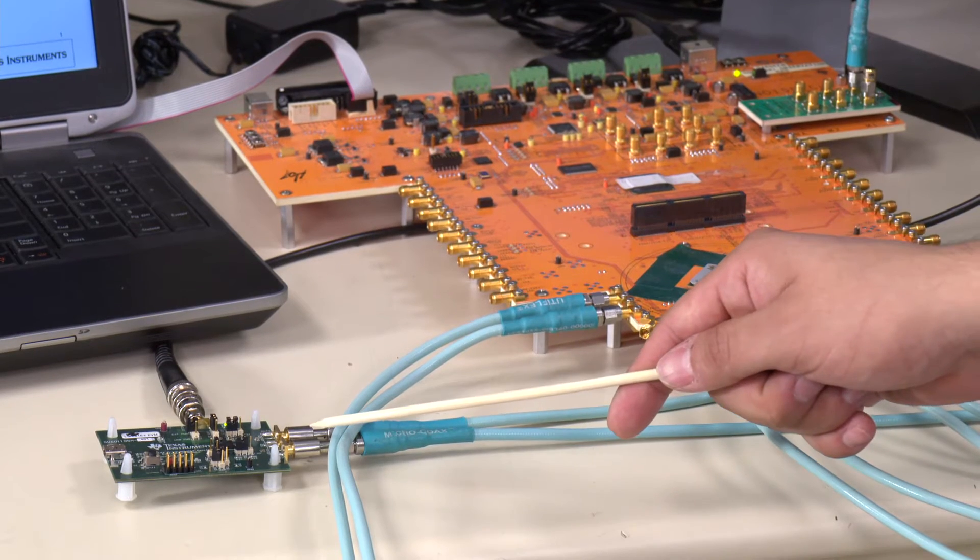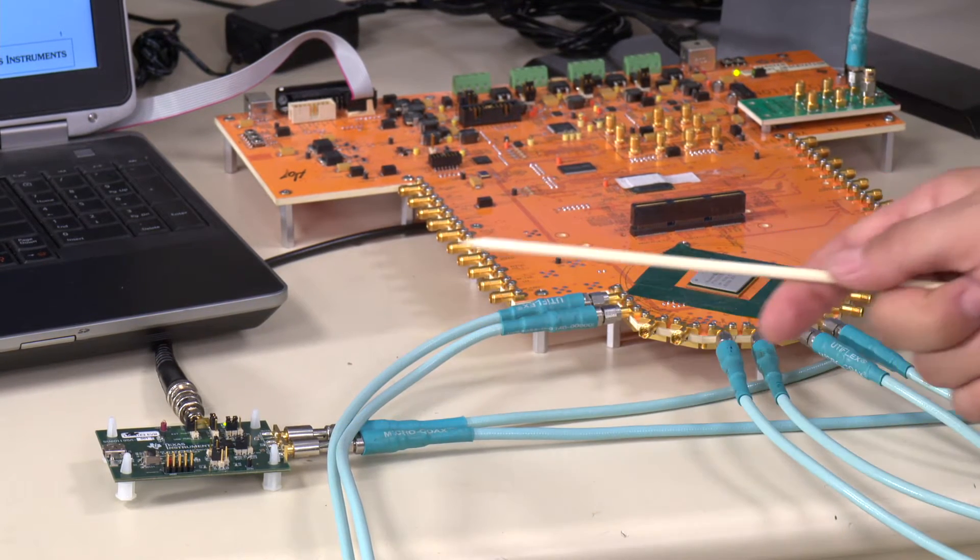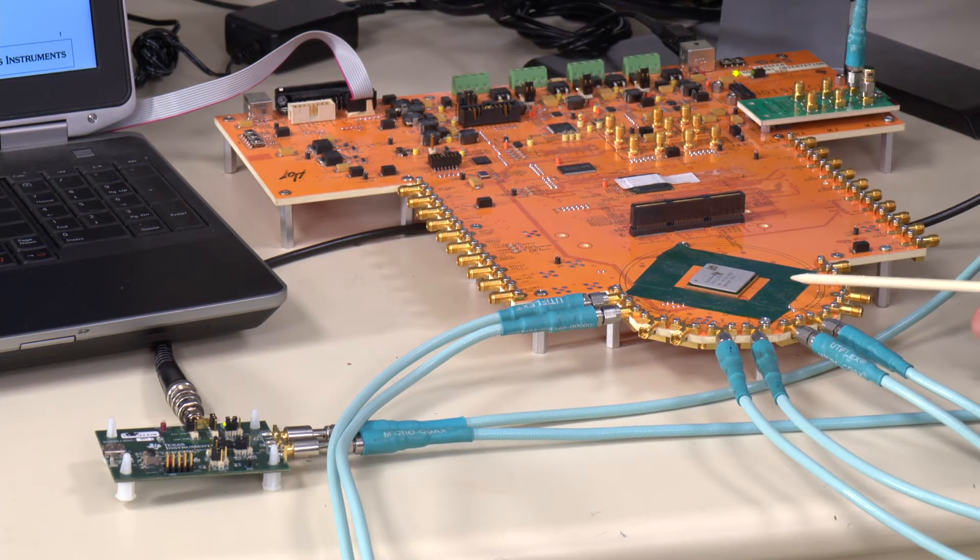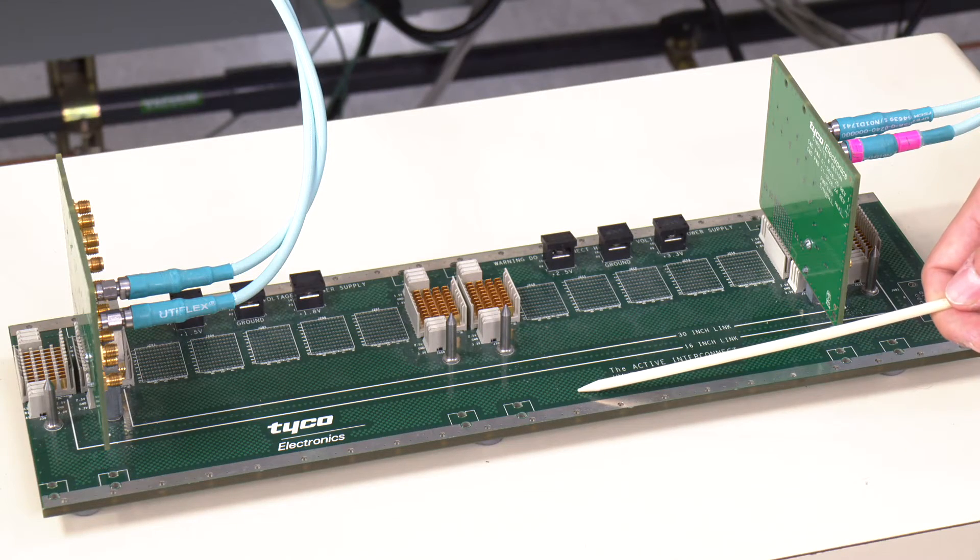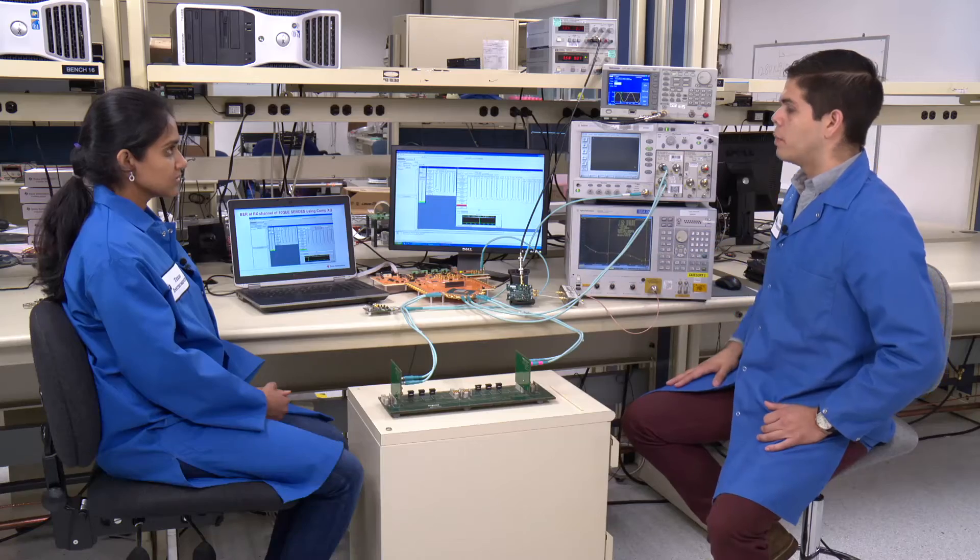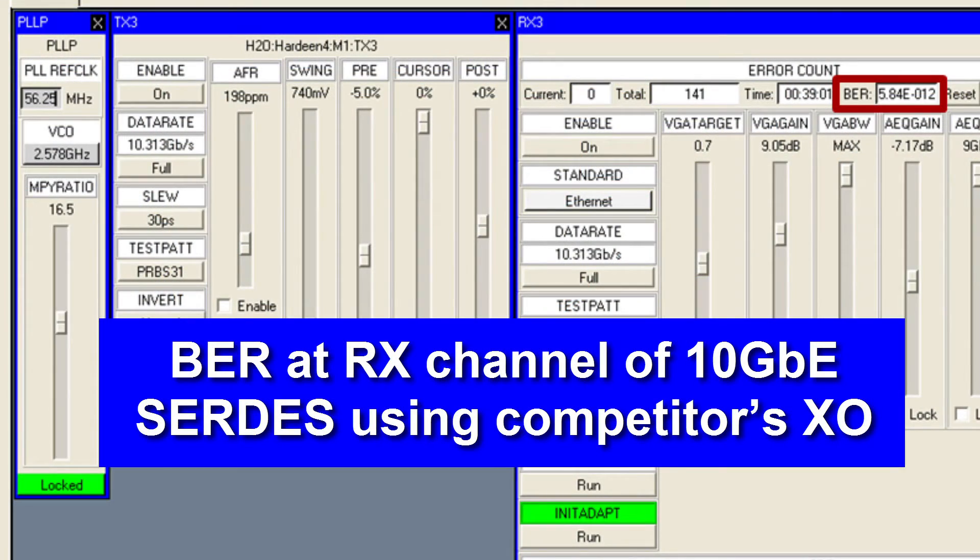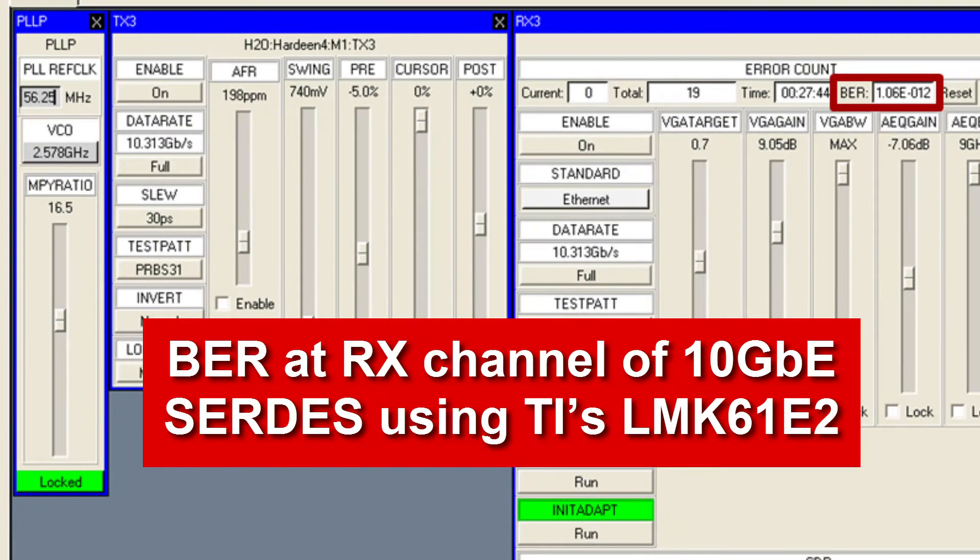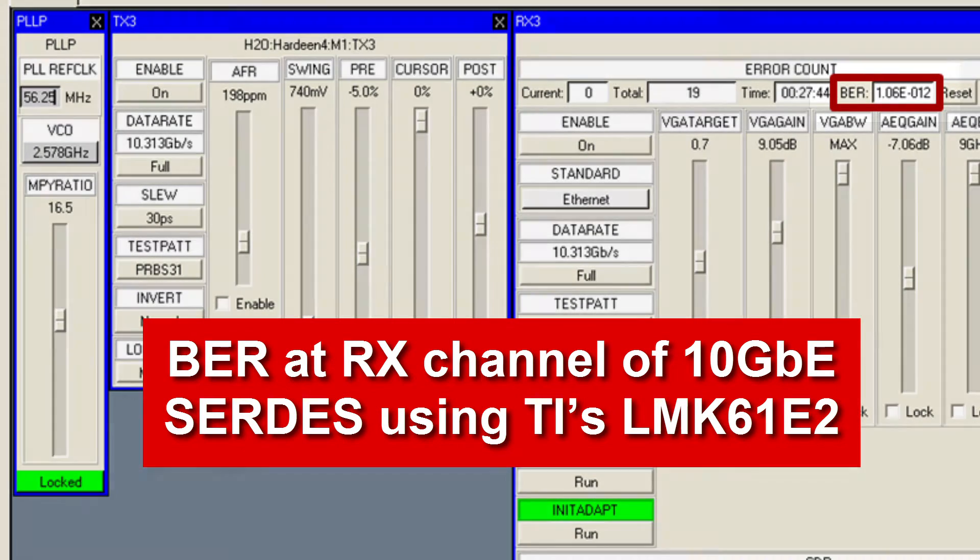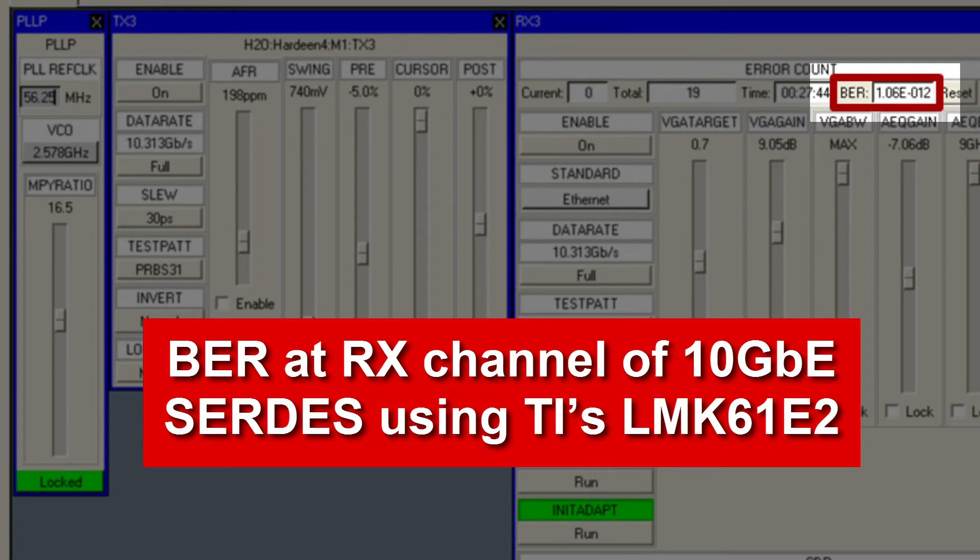This is the LMK 61E2 EVM acting as a reference clock for a 10-gig SERDES link on TI's proprietary ASIC. This is the lossy backplane for the SERDES link. We ran a bit error rate test for about 30 minutes using our competitor's part, and the results you see on the screen are the results of that experiment. By simply replacing the competitor's part with TI's oscillator, we see an improvement about 5x.